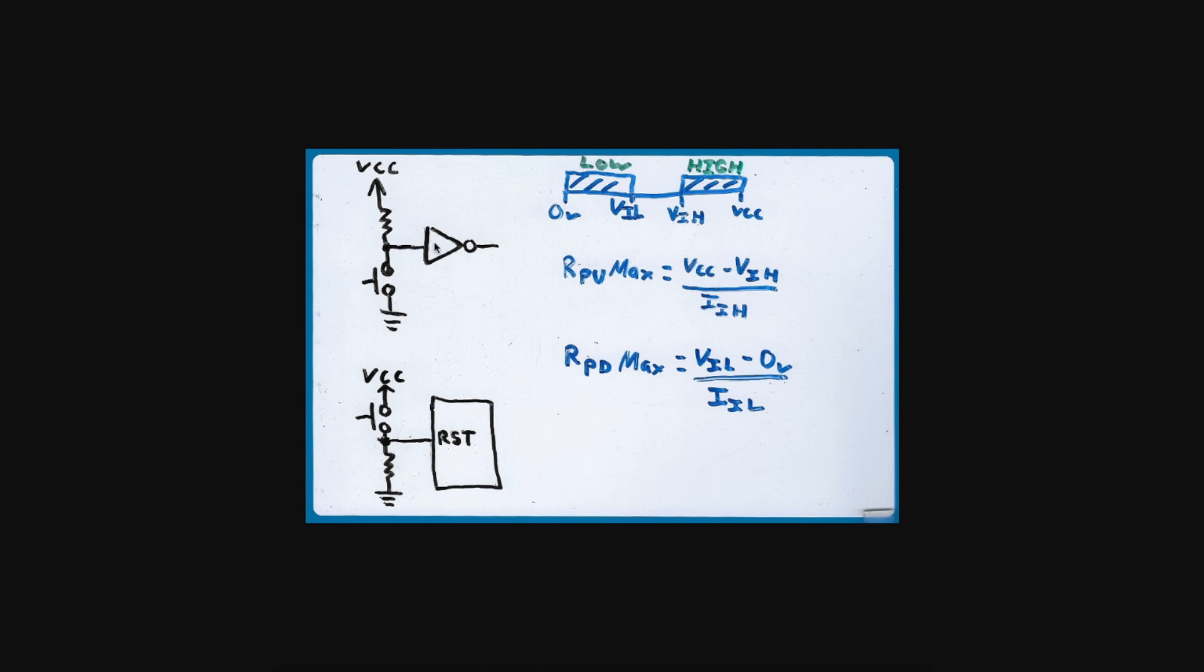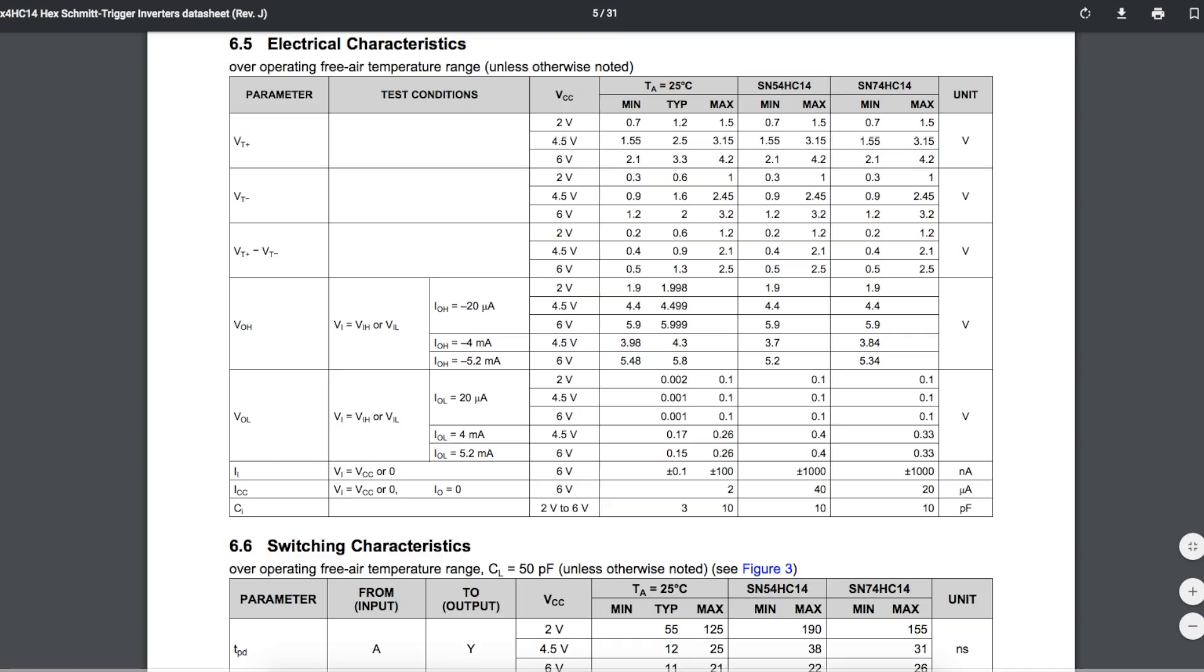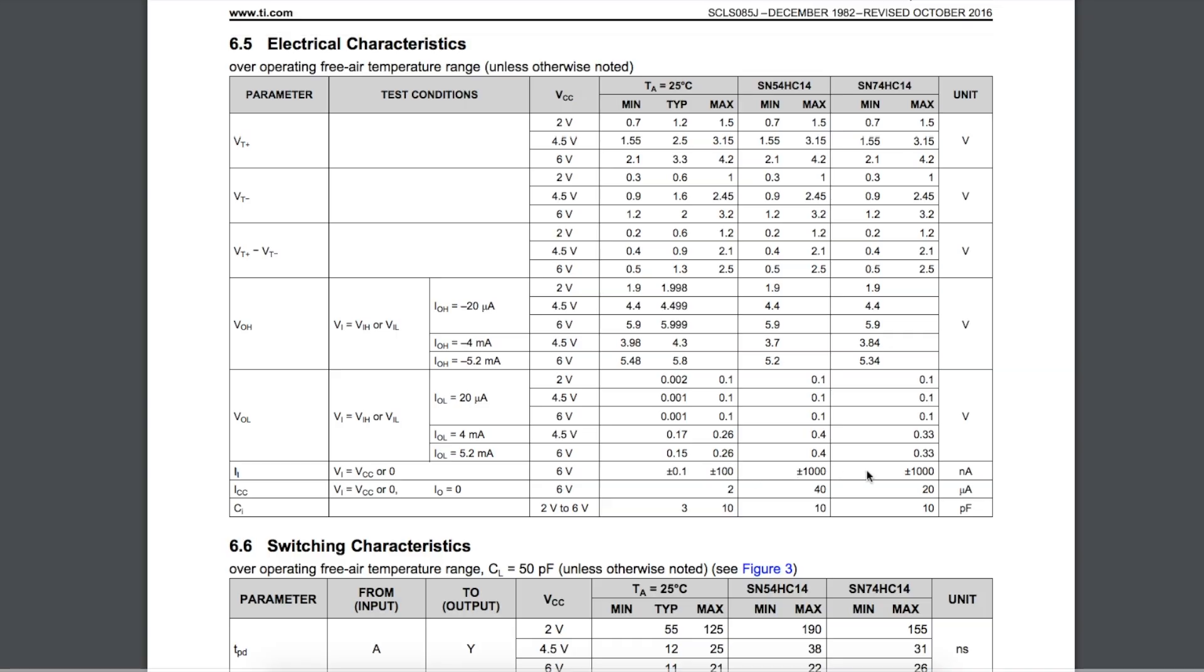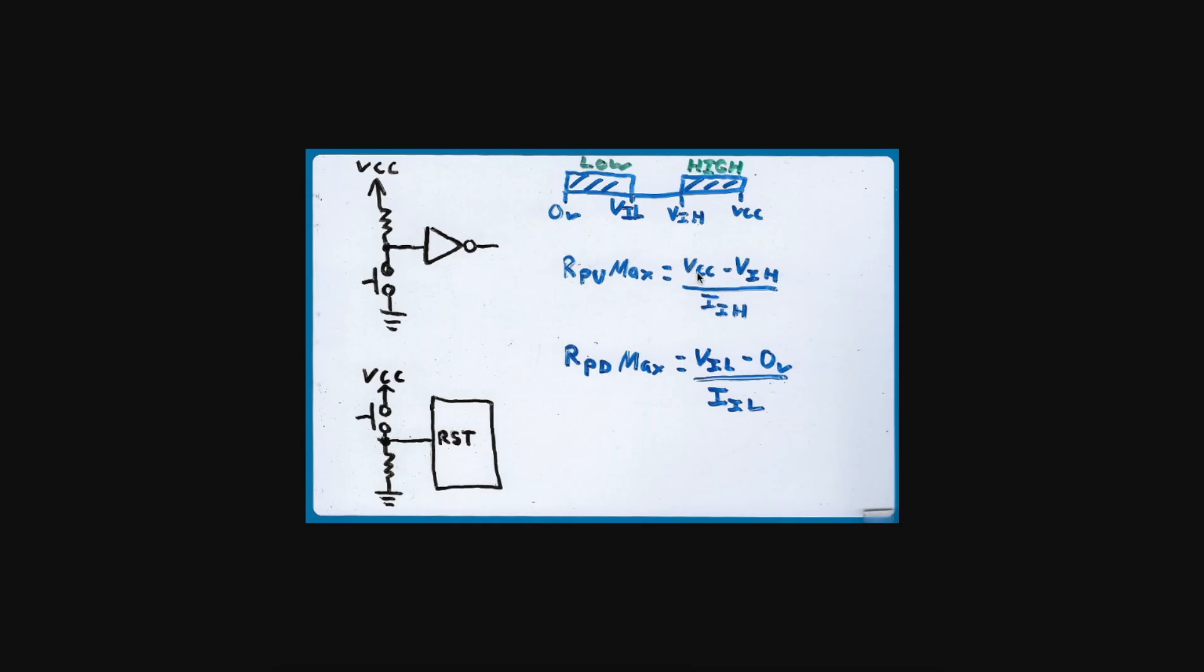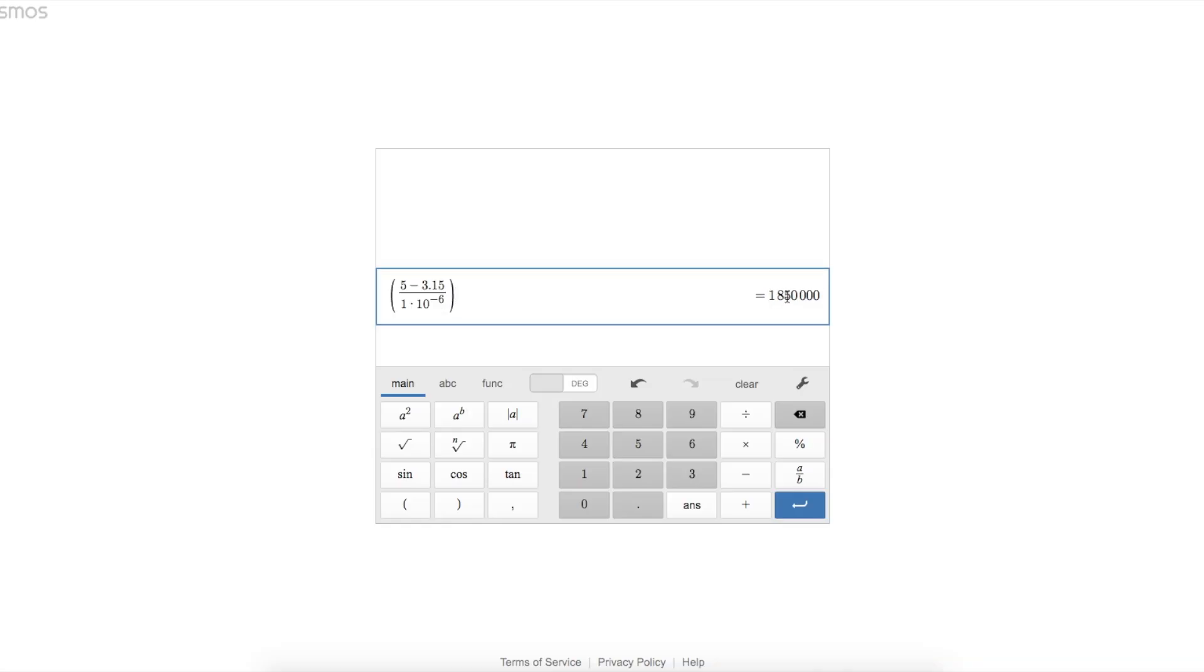And now for the leakage current on a CMOS input, the input current, worst case across temperature, would be 1 microamp. So operating at 5 volts, we have 5 minus 3.15 volts divided by 1 microamp. And that's the maximum resistor value we should be using as a pull-up to make sure we can see a valid logic high here. And that gives us 1.85 megs of pull-up resistance maximum.